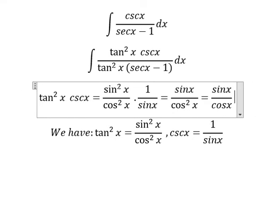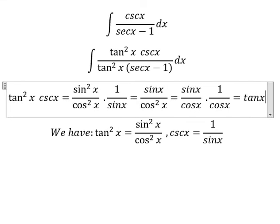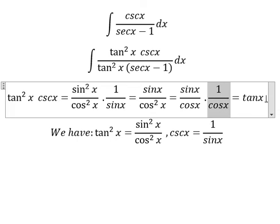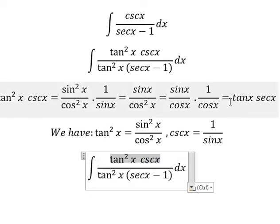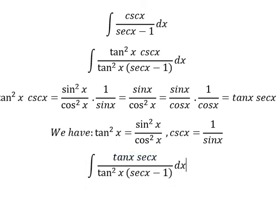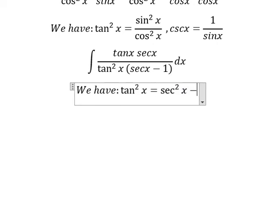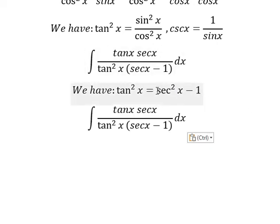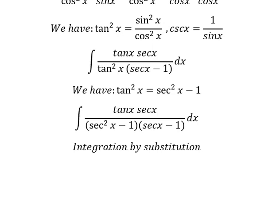We have sine x over cos x and 1 over cos x. This one is tan x, and this one is secant of x. So we change this into tan x times secant x. Next, we have the second formula: tan x squared equals secant x squared minus 1. We will substitute that in here.